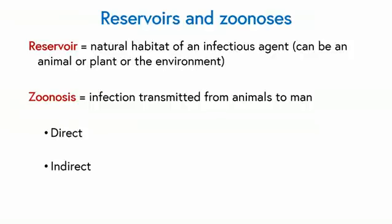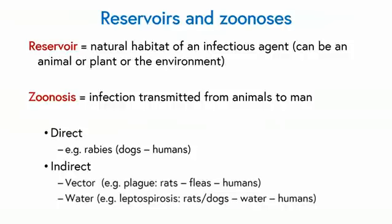The infection can happen in different ways. It can be direct — for example with rabies, where the virus in the dog gets into the saliva and into humans when they bite. Or it can be indirect, for example with plague, where the plague in rats gets transmitted via fleas and then into humans. Or it could be via water, as in leptospirosis, where rats and dogs infected with leptospirosis pass it into their urine and then into water, which may then infect humans.